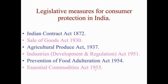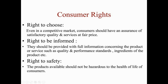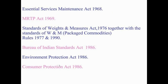We will now move forward to legislative measures for consumer protection in India. These include the Indian Contract Act, the Sale of Goods Act, the Agricultural Produce Act, the Industries Development and Regulation Act 1951, the Prevention of Food Adulteration Act 1954, the Essential Commodities Act 1955, the MRTP Act 1969, the Bureau of Indian Standards Act 1986, the Environment Protection Act 1986, and the Consumer Protection Act 1986.